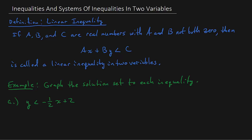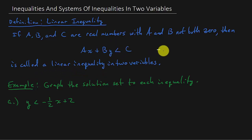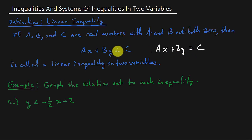In this video we're going to look at inequalities and systems of inequalities in two variables. Let's look at the definition of a linear inequality. If a, b, and c are real numbers with a and b not both zero, then ax plus by is less than c is called a linear inequality in two variables. You might recognize this from linear equations — it's the same thing, just with an inequality symbol instead of an equal sign.